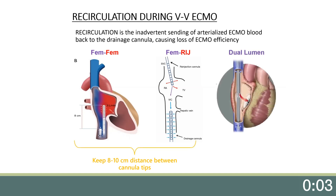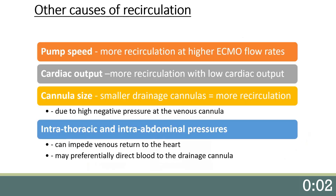The configuration on the right is a dual-lumen, single-site, right internal jugular vein cannulation. In this scenario, the distance between the drainage holes and the return holes is fixed. However, the oxygenated ECMO return blood is directional and can be pointed towards the tricuspid valve simply by rotating the cannula. If not pointed towards the tricuspid valve, blood becomes more turbulent in the right atrium and is more likely to be sent to the drainage holes. In addition to cannula position, there are several other causes of recirculation. Pump speed is one cause, as there is generally more recirculation at higher ECMO flow rates. There can be more recirculation with low cardiac output if less blood is pumped through the heart. The use of smaller drainage cannulas may also cause more recirculation due to excessive negative pressure in the venous cannula. Lastly, intrathoracic and intraabdominal pressures can impede venous return to the heart, which may preferentially send blood to the drainage cannula.